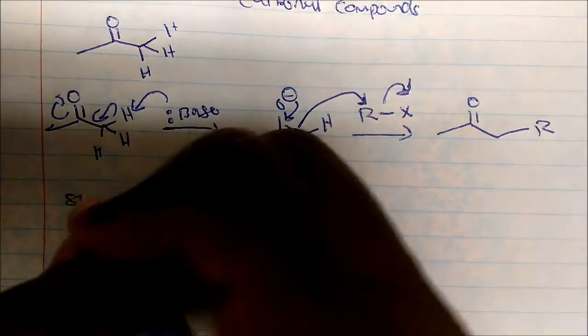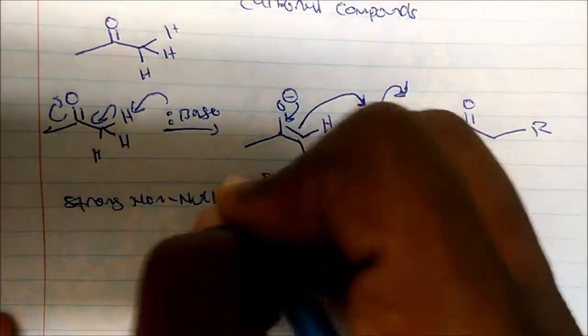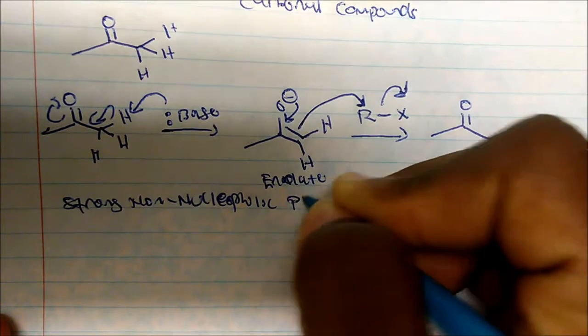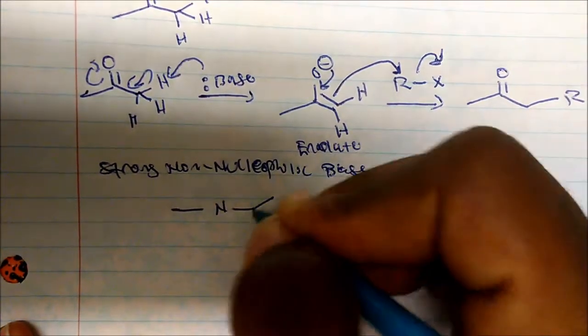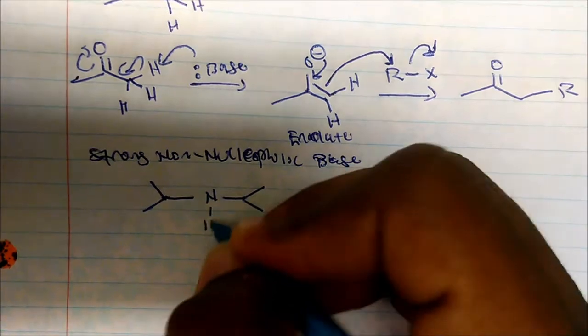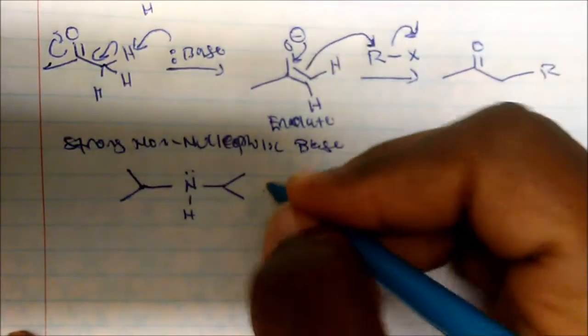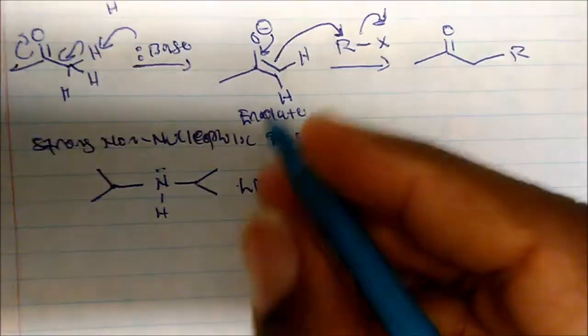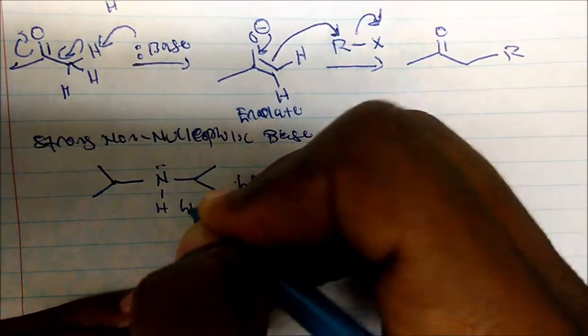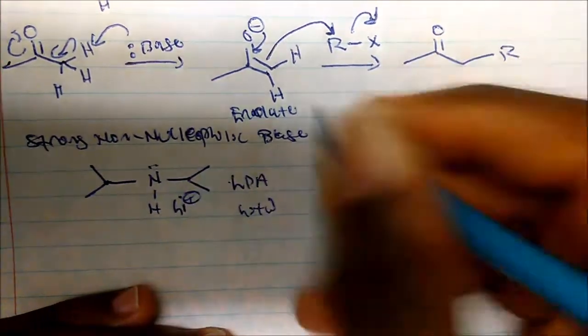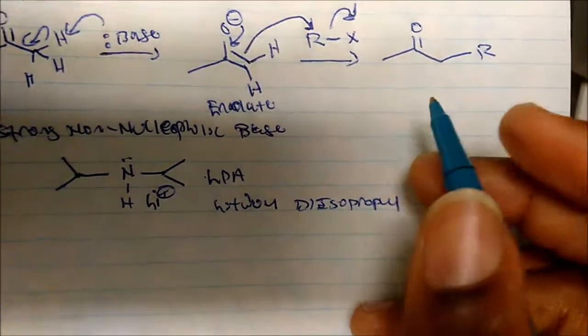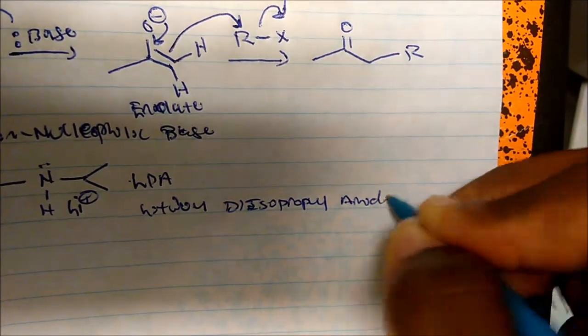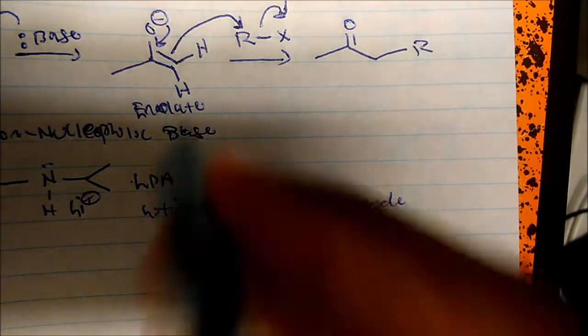What are the type of base we use? We use strong non-nucleophilic base. The one that's more common is this one here. This one is called LDA. It has two lone pairs on nitrogen and lithium in it. This is lithium diisopropylamide, more commonly called LDA, and it's a strong non-nucleophilic base.